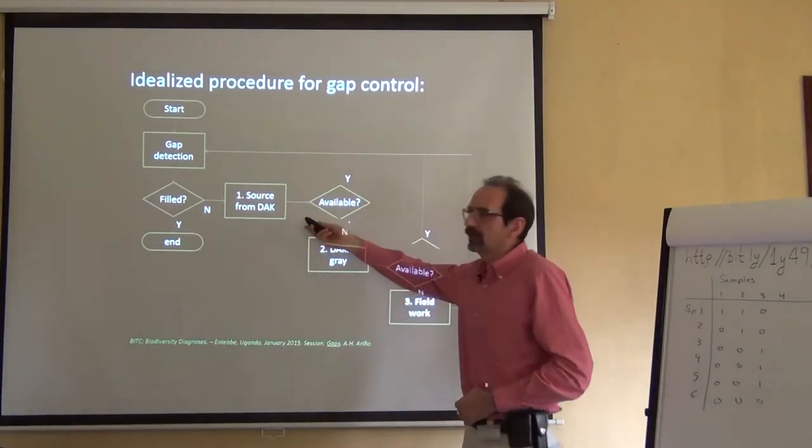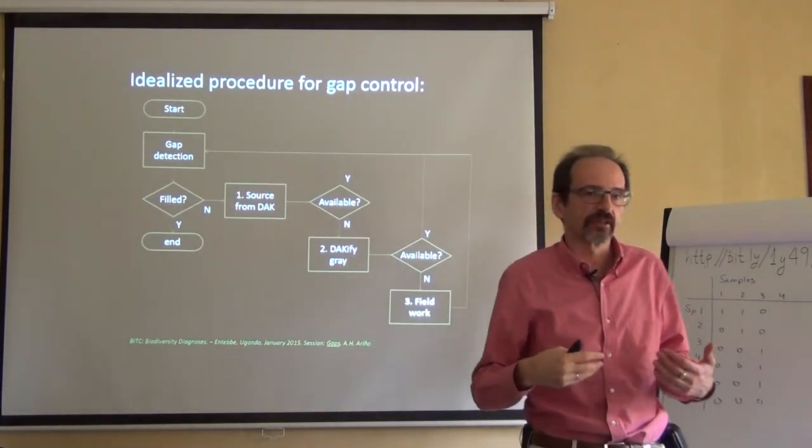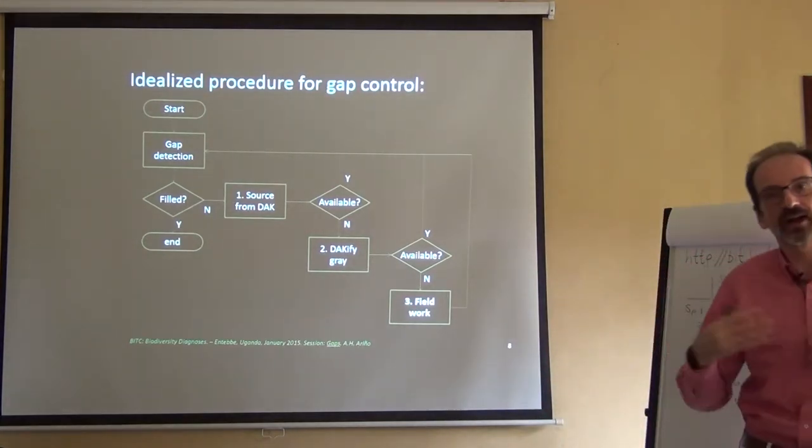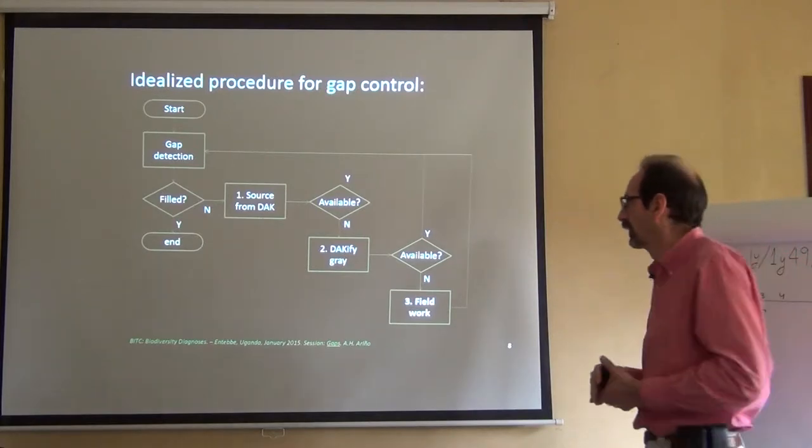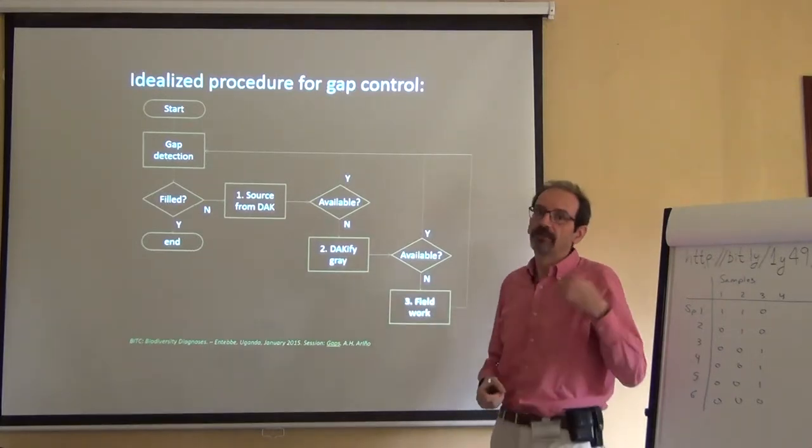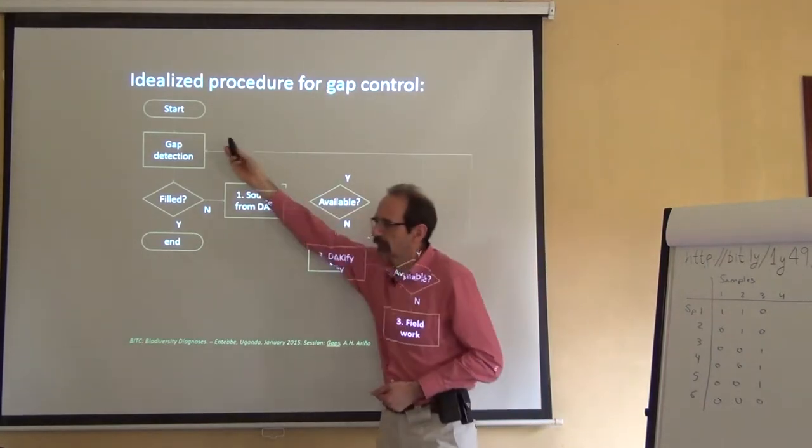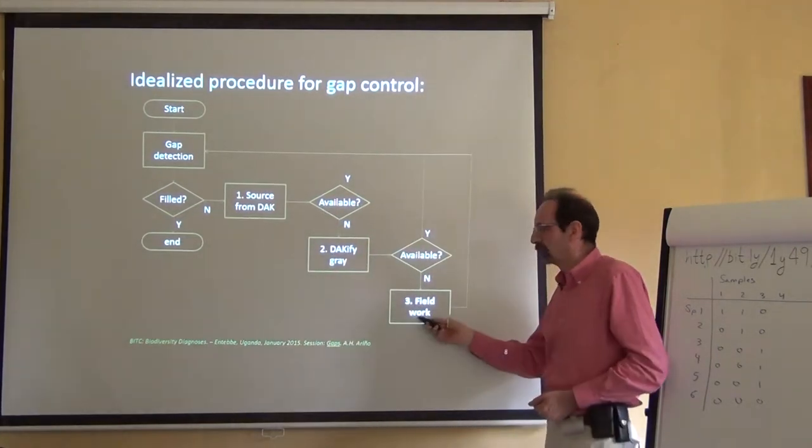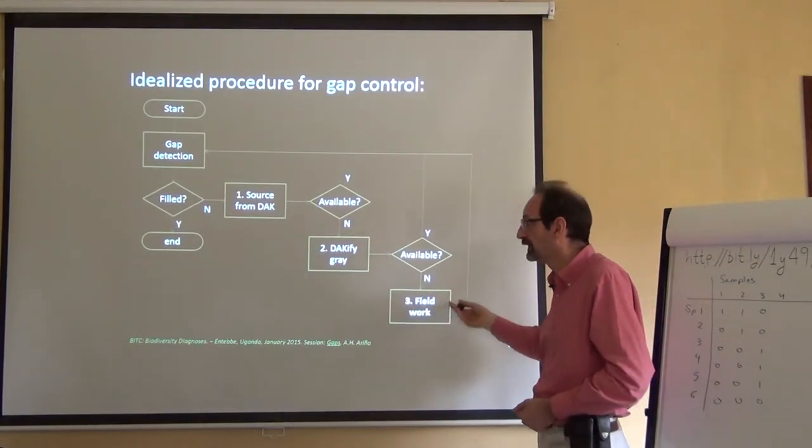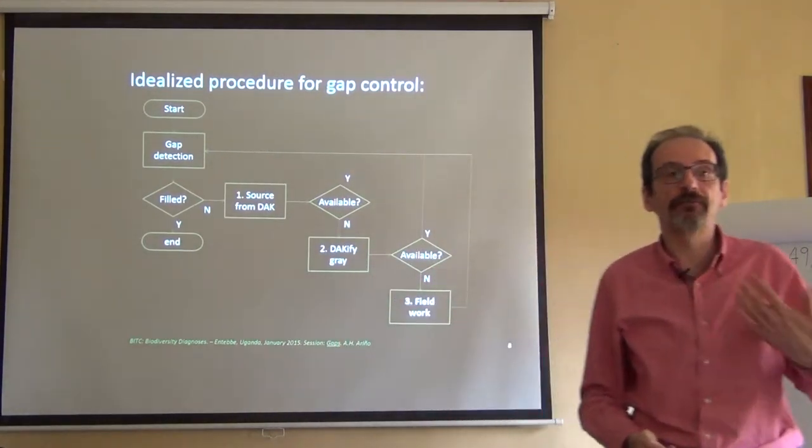If there is no DAC available, then we try to get to something slightly harder, which is trying to get existing data in hard formats into digital formats. I call this DACifying gray data. If there aren't any gray data that could be DACified, and then go back to the cycle and eventually end, then we are stuck to fieldwork. We have to go out and collect the data. But again, once we have the data, we have to repeat the gap detection analysis to see whether we have filled the gap or not.